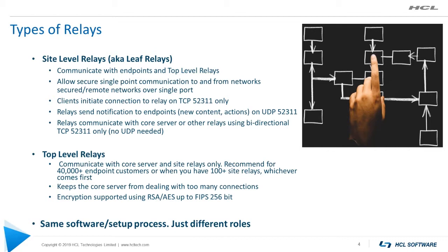Site relays are what you will have the most of. Site relays are the frontline relays to your endpoints — they get all the client deltas coming in based on your set reporting interval, then package and compress all those deltas and send them up the chain. You'll want to have relays everywhere because they distribute the load and save tons of bandwidth. I love to see customers designating site relays and backup relays on every single network in their environment, especially for networks separated by slow WAN links.